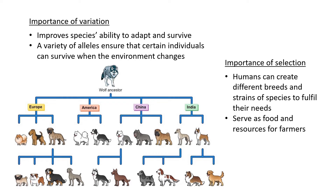What is the importance of selection itself? For humans, it's important because we can create different breeds and strains of species — including plants — to fulfill our needs. That is mainly why we see so many dog breeds, and basically all dogs come from the wolf. We have changed their looks, personality, and even their genes to our own benefit, though many dogs now suffer from hip dysplasia, cancer, eye problems, and skin problems because of how drastically we've selected and changed their genes.